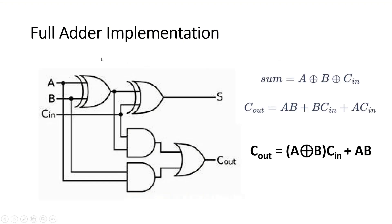In our previous video we saw that the expression for sum is A XOR B XOR C, and C out has two expressions possible. One is AB plus BC plus CA, and another one is A XOR B into C in plus AB. And this is the implementation of this third expression. The sum expression remains the same.